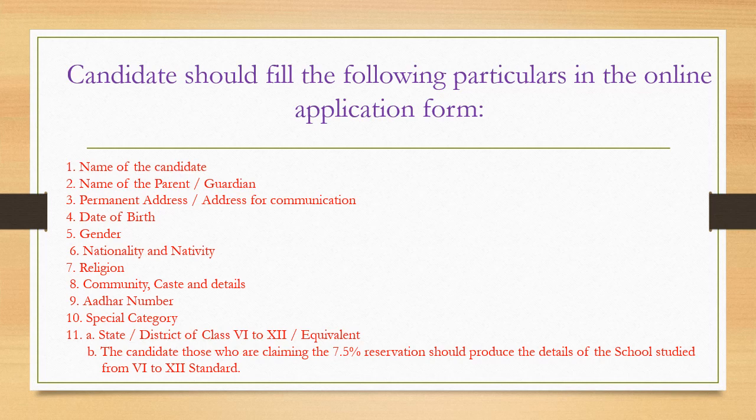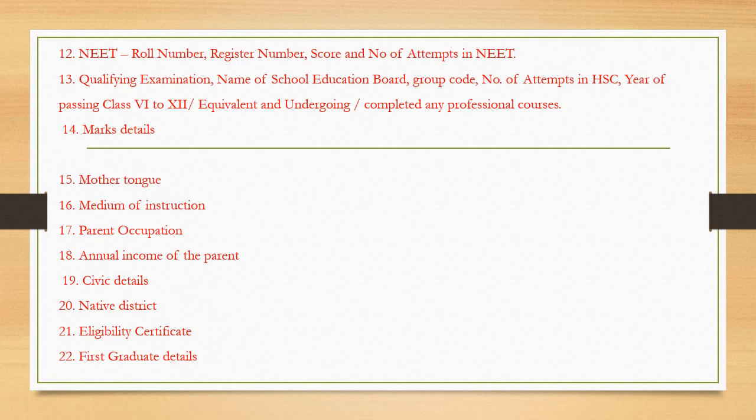For special category, those claiming 7.5% reservation should produce details of school studied from 6th to 12th standard. Then NEET roll number, register number, score, and number of attempts in NEET.